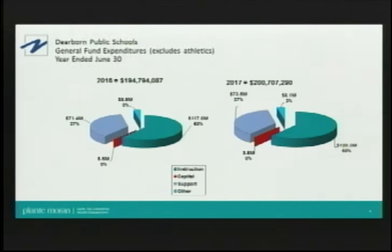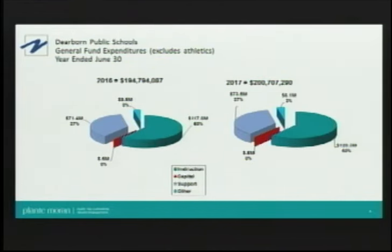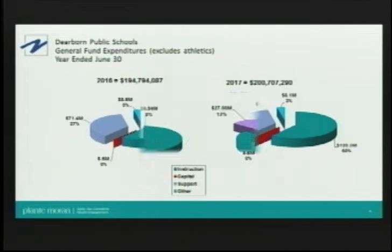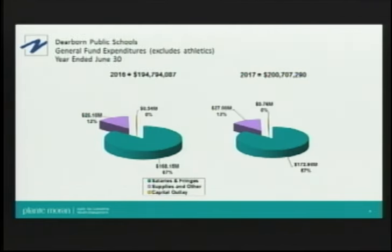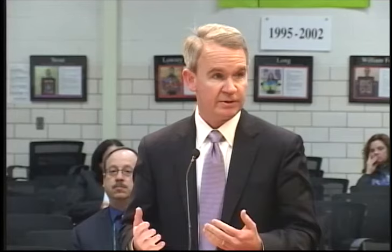Looking at general fund expenditures by function, for 2017, roughly 60% of expenditures were on instructional classifications — the strict state definition including only direct classroom activity and teacher-pupil interaction. The next slice is support, which includes operations and maintenance, transportation, and school administration. By object, roughly 87% of the district's expenditures relate to salary and fringes, highlighting that this is a service business focused on educating students.